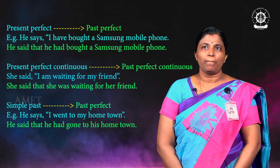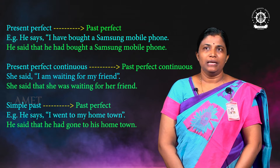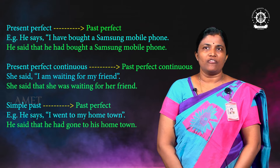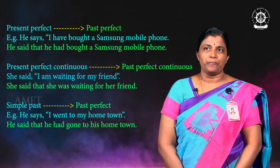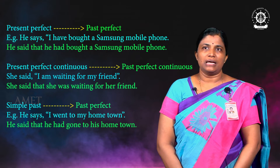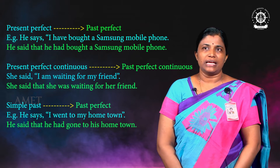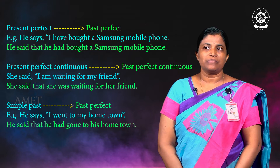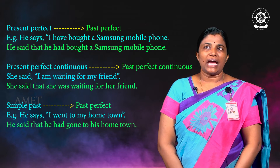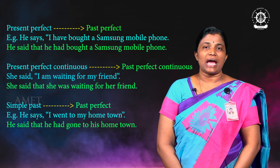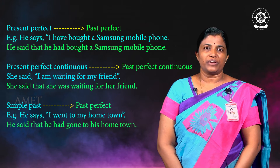The third tense change: present perfect tense becomes past perfect. For example: 'He says I have bought a Samsung mobile phone' becomes 'He said that he had bought a Samsung mobile phone.' 'I have bought' — present perfect — becomes 'he had bought' — past perfect in indirect speech.